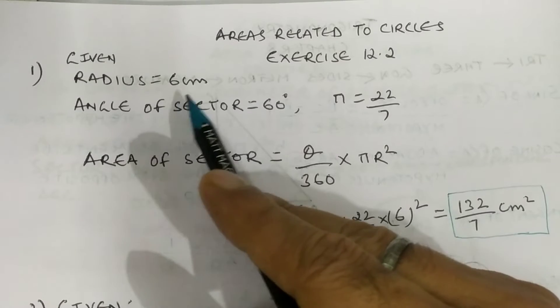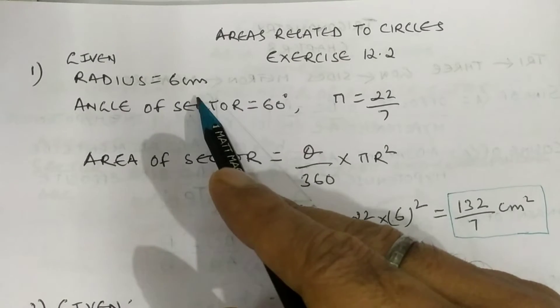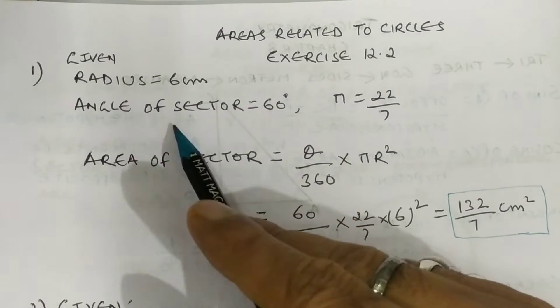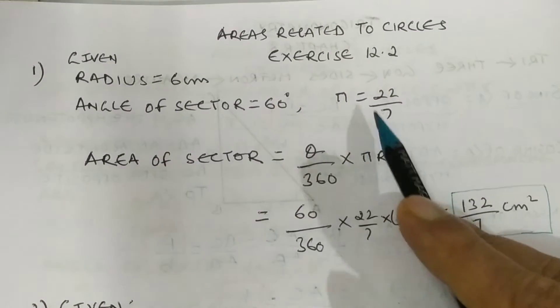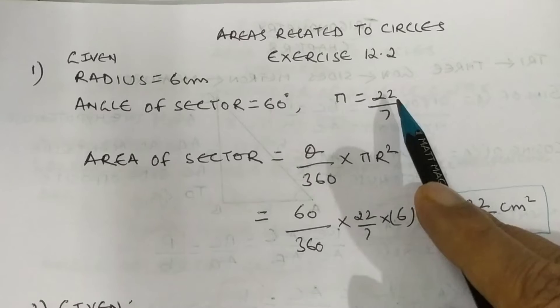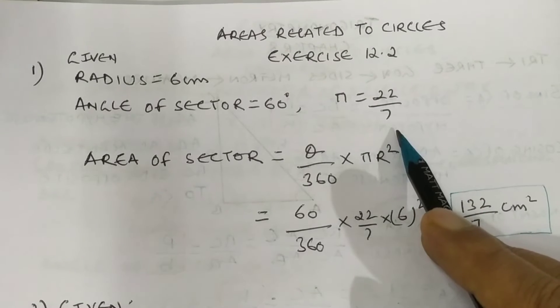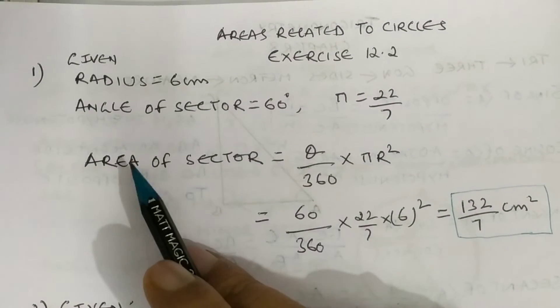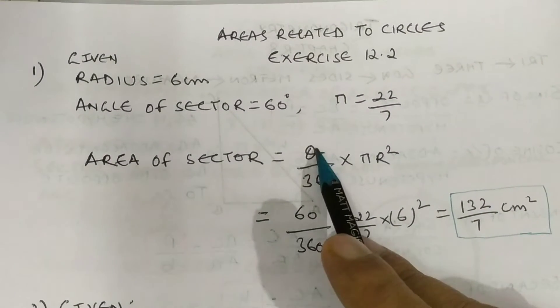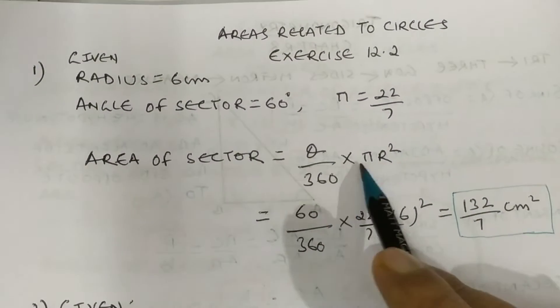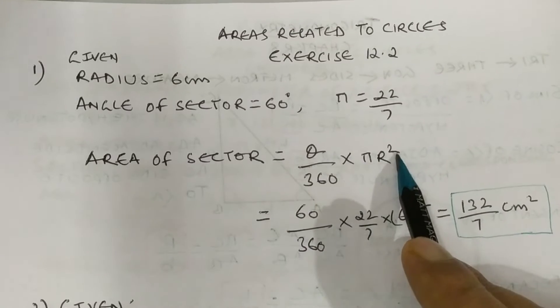Here we are given: radius of the circle = 6 cm, angle of the sector = 60 degrees, and pi = 22/7. We know that the area of the sector equals theta upon 360 into pi r squared.